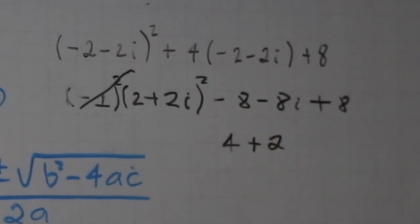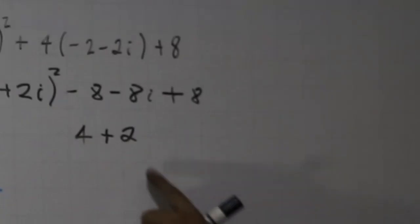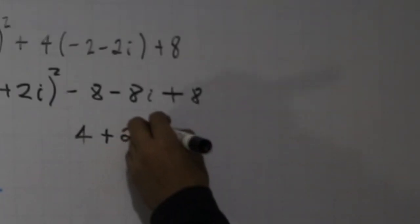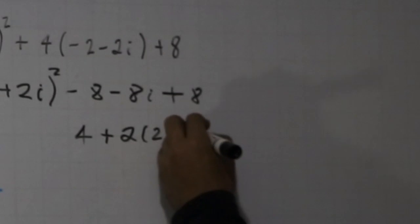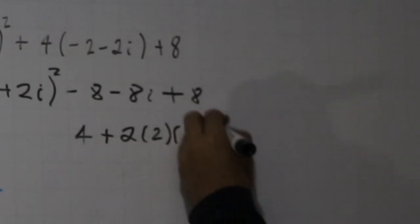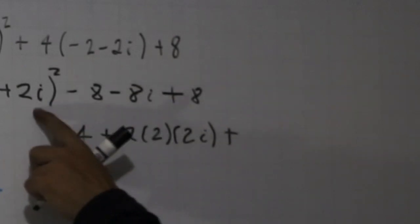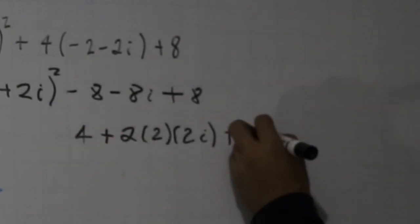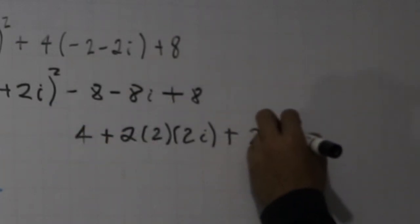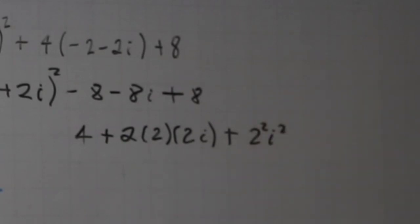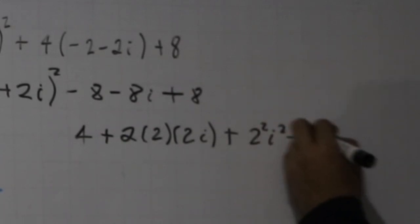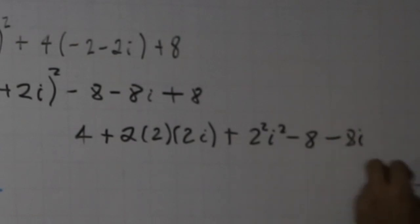Remember the formula of the perfect square, or the perfect square binomial: 2 times 2 times 2i. And last, we have (2i)², so we have 2² and the number i².